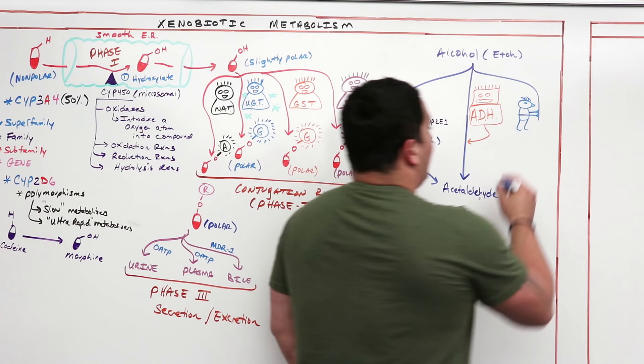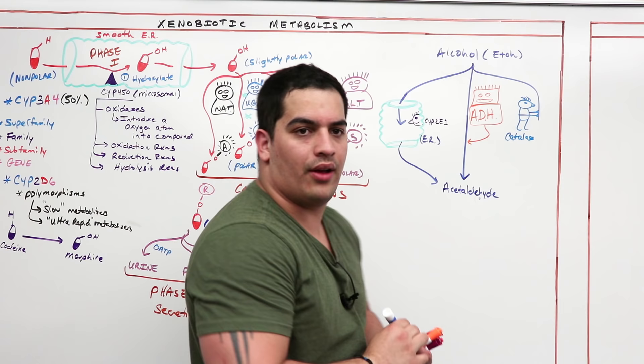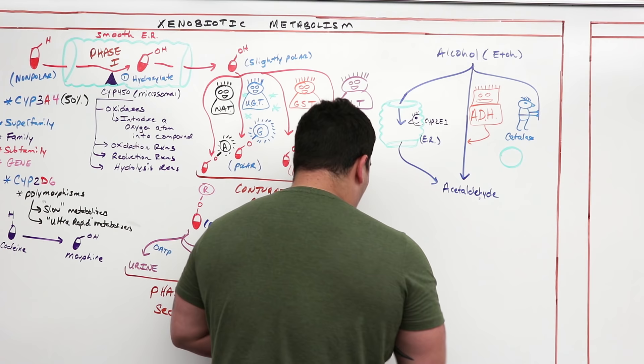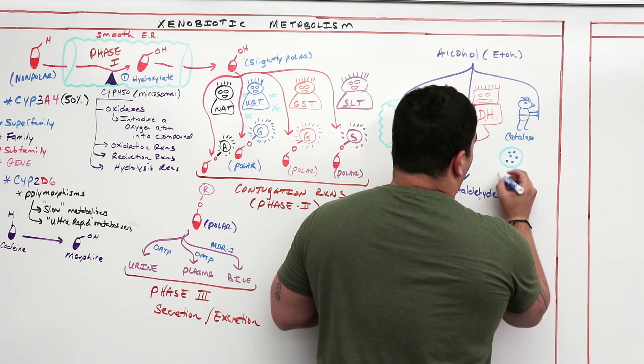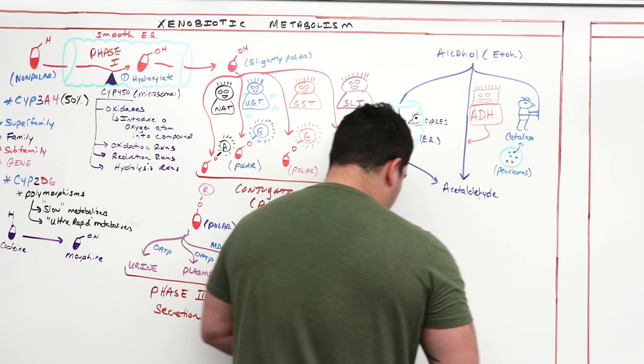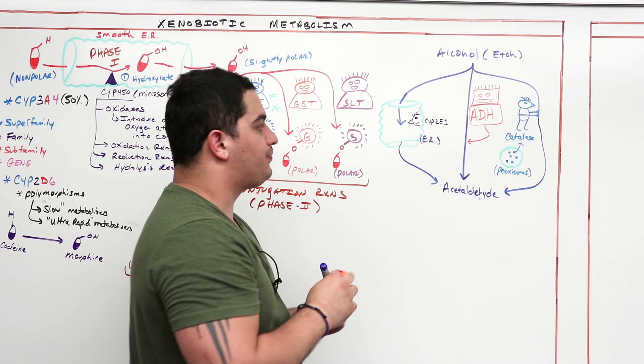The third pathway involves catalase, an enzyme found in peroxisomes. Alcohol can also be metabolized by peroxisomes, which contain catalase. When catalase reacts with alcohol, it converts that alcohol into acetaldehyde.